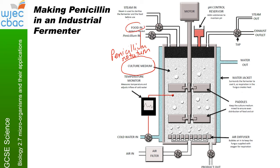The fermenter gets plenty of steam — first to sterilize the fermenter and the food before use, but also to provide moisture, because moisture is needed for fungi and bacteria to help them with reproduction. A temperature monitor measures the temperature inside the fermenter. When it starts to get warm — because the fungi carry out respiration which releases heat energy — the temperature monitor tells the cold water tap to let cold water in. The cold water surrounds the tank, and the heat produced by respiration passes out the other side.